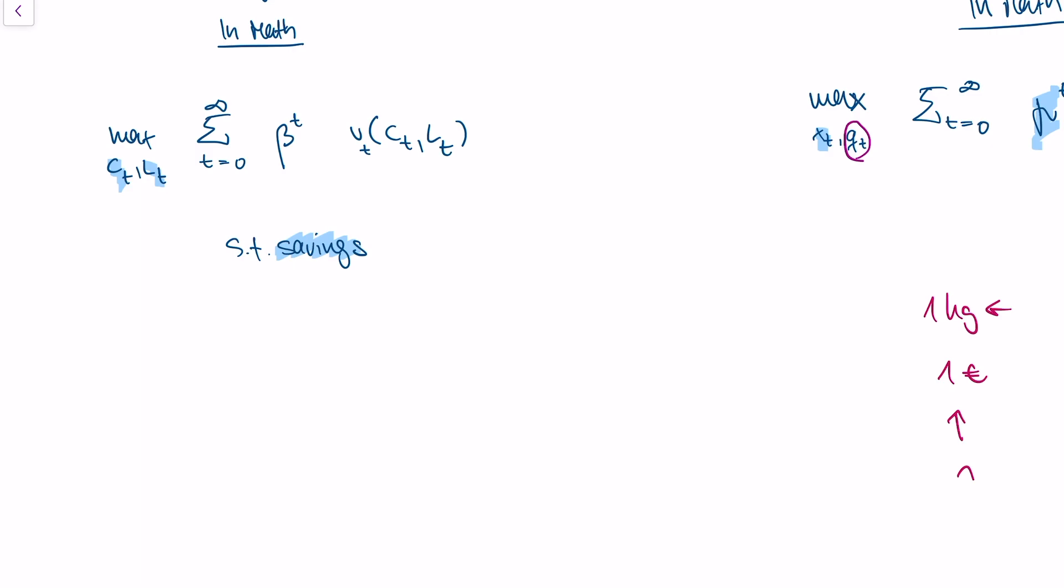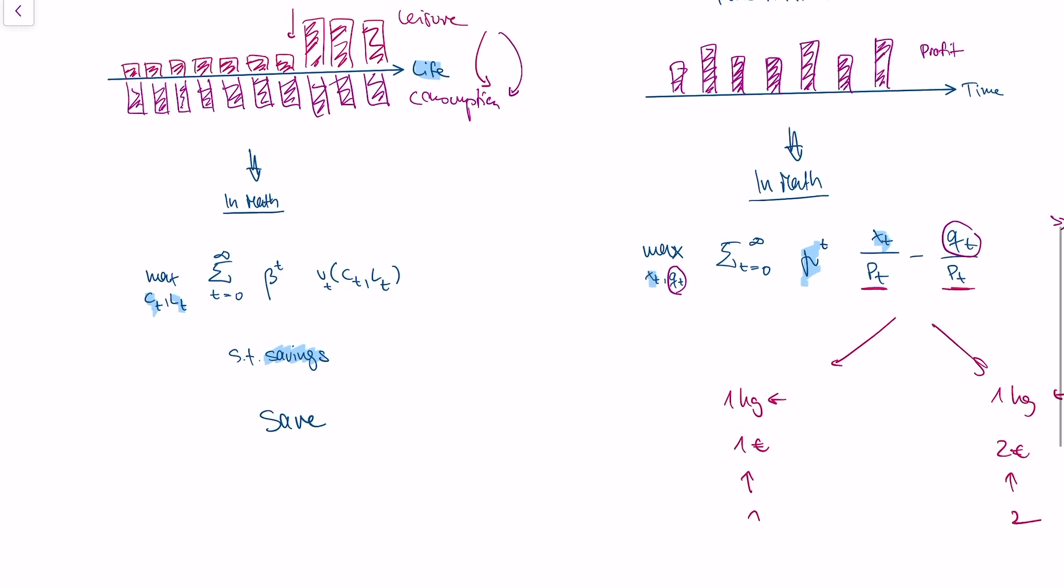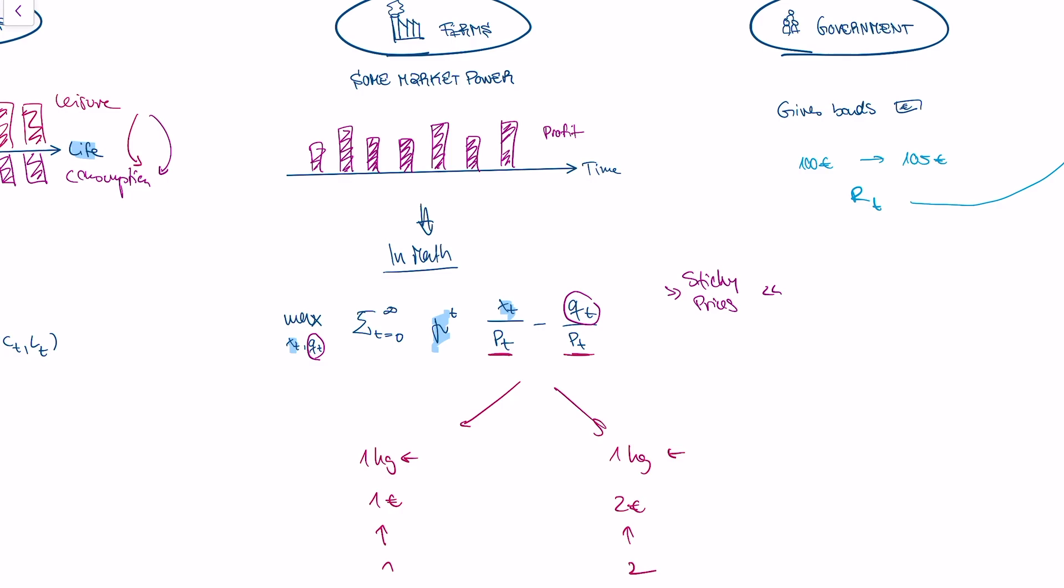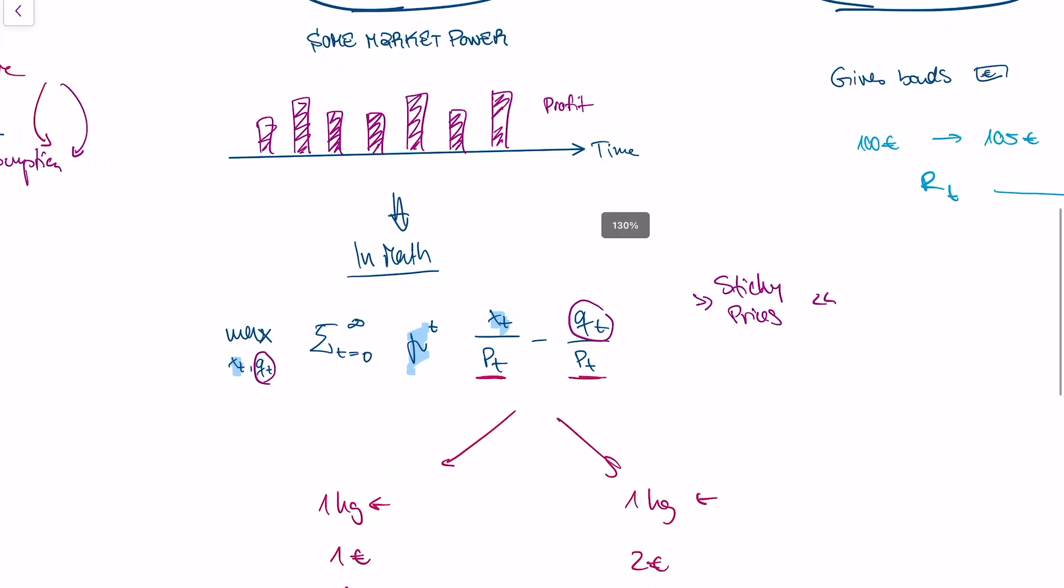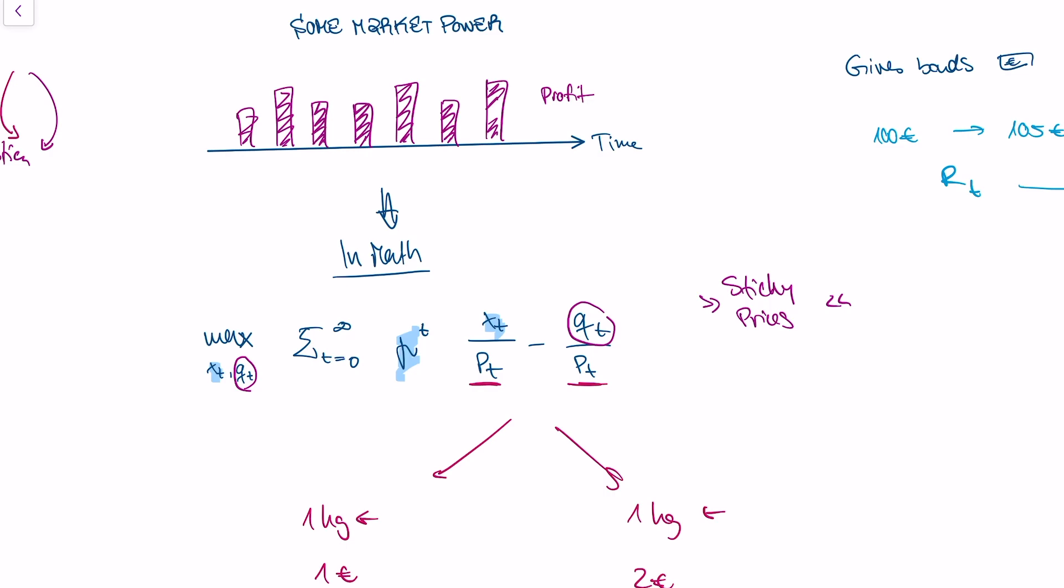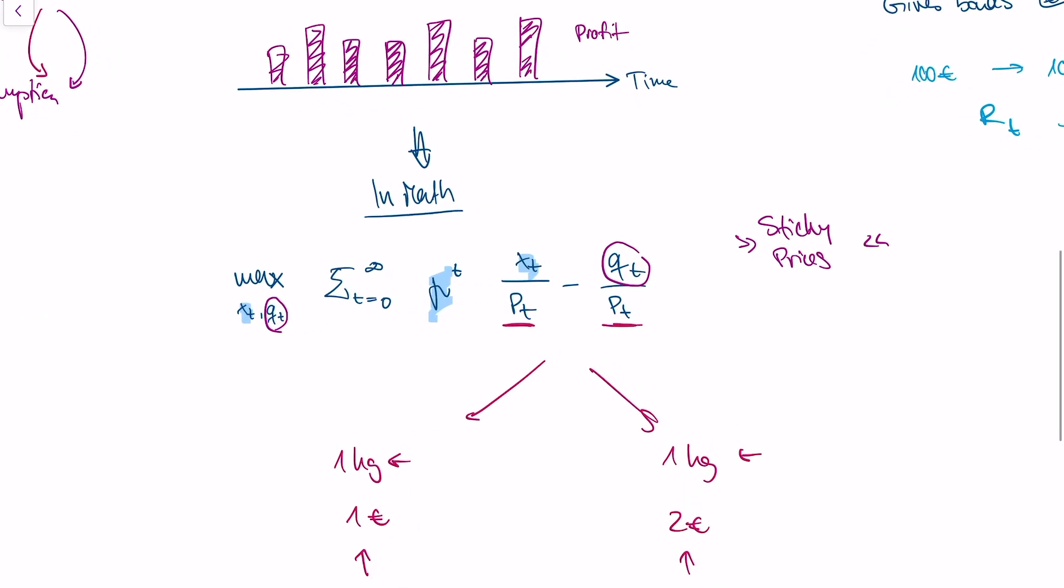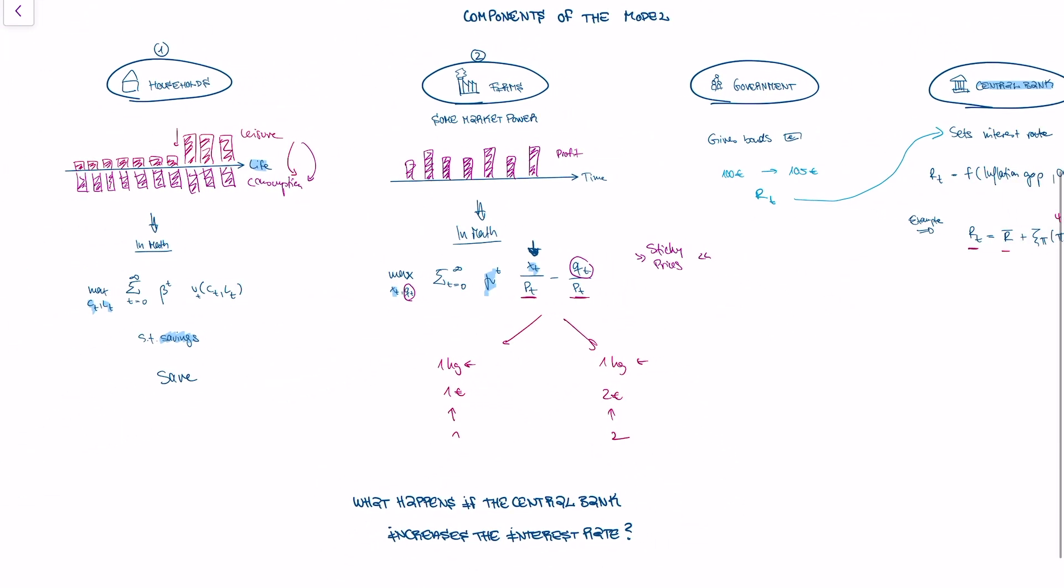If households save more and consume less, what will our firms do? Well, our firms now see that they can actually get less profit because households save more, which means they consume less, which means that the quantity of stuff that the firm sells is going down. So their profits are going down. If firms' profits are going down, if they produce less, that means that they employ less people.